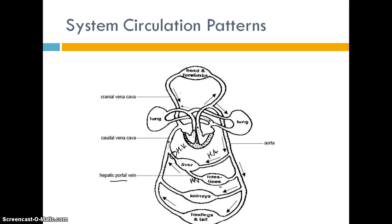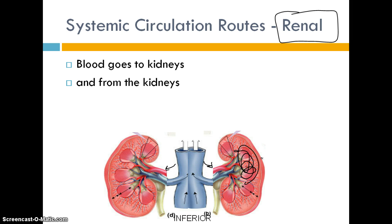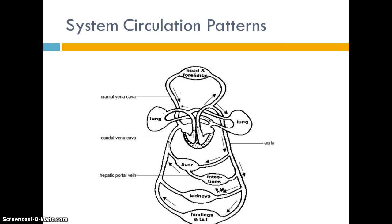Now let's cover the kidneys' circulation pattern, called renal circulation. Just like any other circulation pattern, it all starts in the aorta, which subdivides into two renal arteries going to each kidney. Blood enters the kidneys and gets filtered, removing all the waste that our cells produce. Once filtered and clean, blood exits through the renal veins and goes back to the inferior vena cava to the heart.